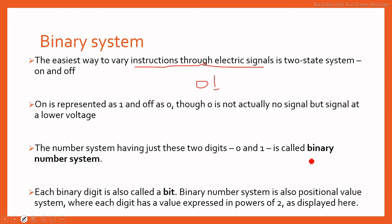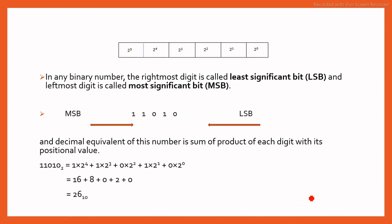Binary number system is having just two digits, 0 and 1. We use a single digit, like 0 is 1 bit, 1 is 1 bit. Binary number system is also a positional value system where each digit has a value expressed in power of 2 as displayed here. Look at this positional value system. In binary, the rightmost bit is called least significant bit (LSB) and leftmost digit is called most significant bit (MSB).